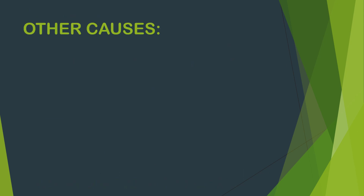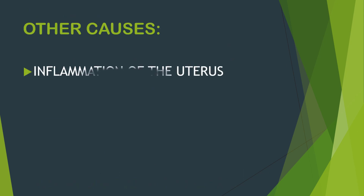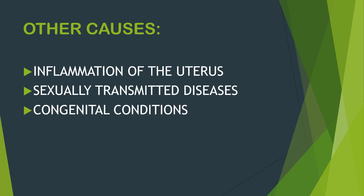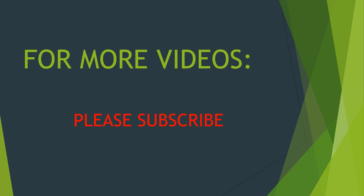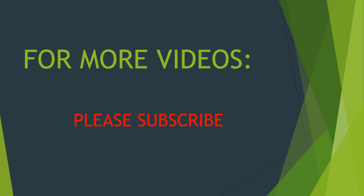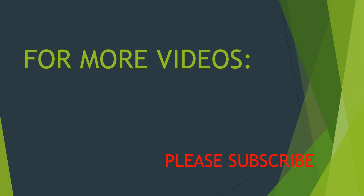Other causes of irregular menstruation include inflammation of the uterus, sexually transmitted diseases, and congenital conditions. For more videos, please subscribe to this channel. Thank you and remain blessed.